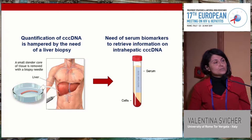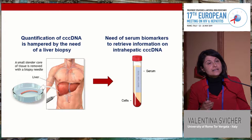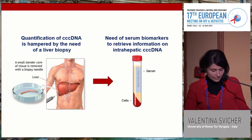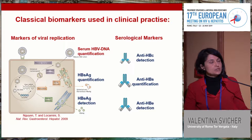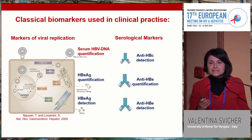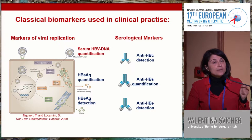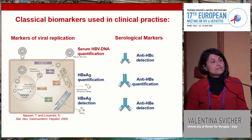This highlights the need for serum biomarkers that can reflect the extent of the intra-hepatic HBV reservoir. Among the classical biomarkers, serum HBV DNA is usually considered the best indicator of viral replication. However, the production of HBV DNA is suppressed by currently available NUC treatment, so this biomarker cannot provide information on the extent of HBV reservoir in successfully treated patients.